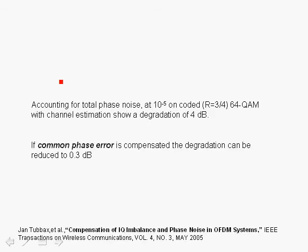Let's take a look at the case where we have 64QAM with a 3/4 rate and a 10 to the minus 5 bit error rate. If we do not combat phase noise, then phase noise will cause a degradation of 4 dB compared to the case where we have no phase noise. If we attempt to estimate the common phase error and correct for it — compensate for it — then the degradation can be reduced to 0.3 dB, which is very significant.